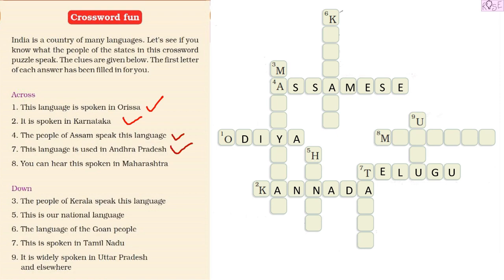Across number eight — you can hear this spoken in Maharashtra. The language famously spoken in Maharashtra is Marathi. After A, we write R, A, T, H, I — Marathi. So we are done with Maharashtra.